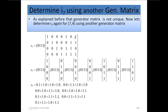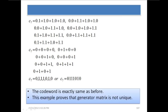Now let's determine i7 using a different generator matrix. As explained before, the generator matrix is not unique. Using this second generator matrix for (7,4) and performing the same operation — multiplying information bits with each column and adding element-wise with modulo-2 — the codeword obtained is again 0 1 1 1 0 1 0, exactly the same result. This proves that the generator matrix is not unique.